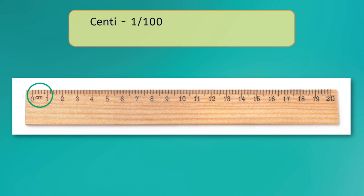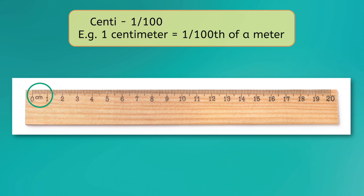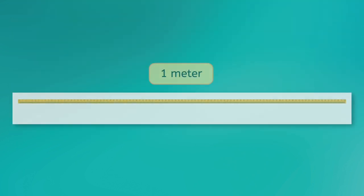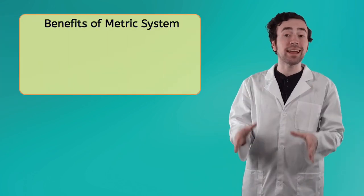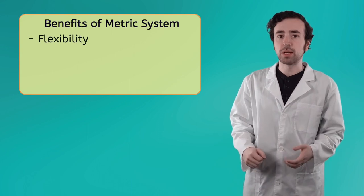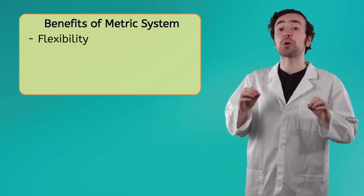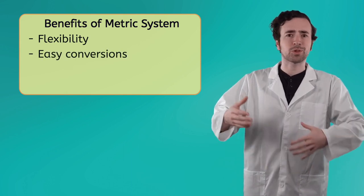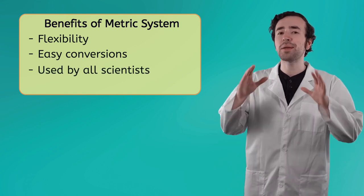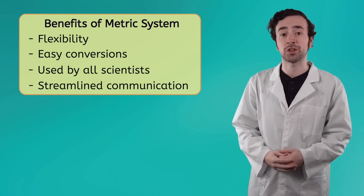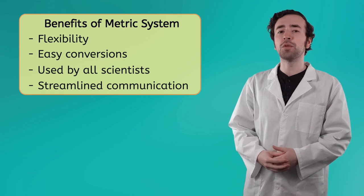Centi means 1 out of 100, so a centimeter is 1/100 of a meter. You can also think of this as a centimeter being 100 times smaller than a meter, or that there are 100 centimeters in 1 meter. Milli means 1 out of 1,000, so a milliliter is one one-thousandth of a liter. All these prefixes can be used with any unit, making the metric system very flexible. Plus, because all the prefixes are just based on powers of 10, it's super easy to convert between different units. We don't have to use all these crazy different conversion rates like I did when I had to make those cookies. Finally, because all scientists use it, it makes it much easier for scientists to share their results with each other.